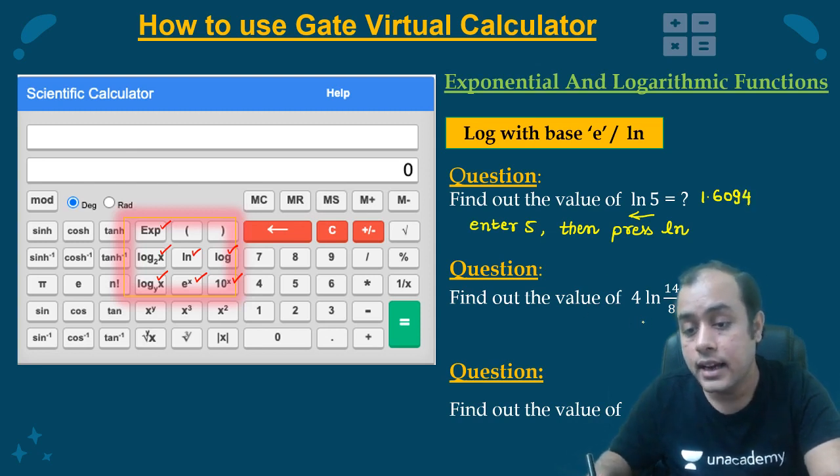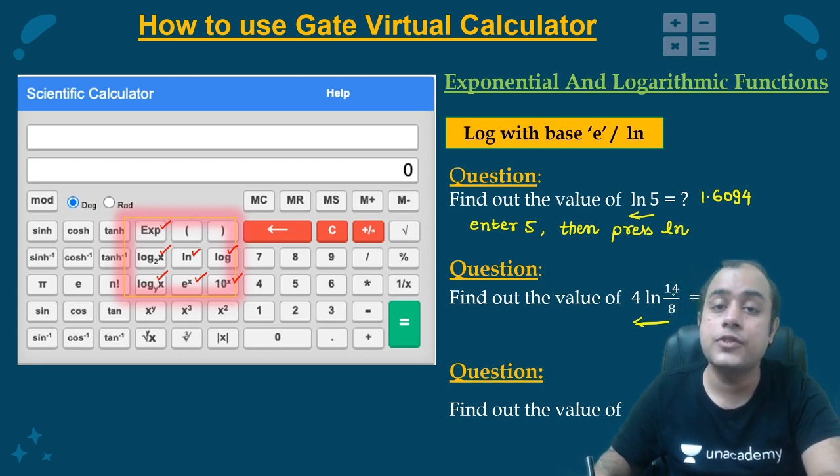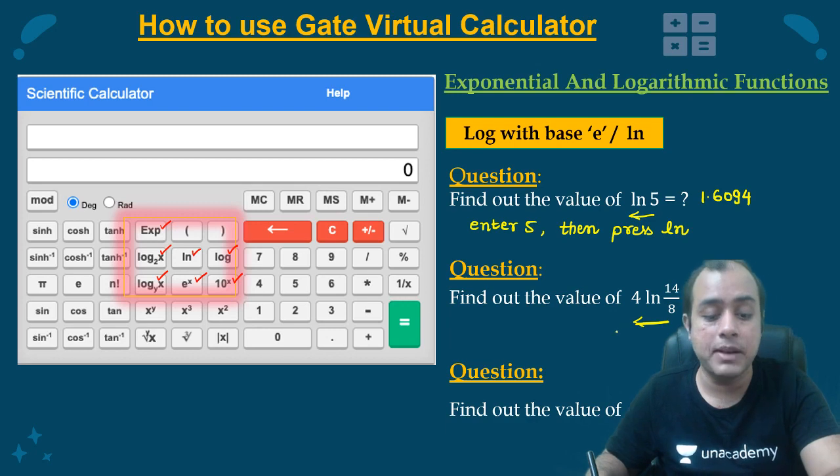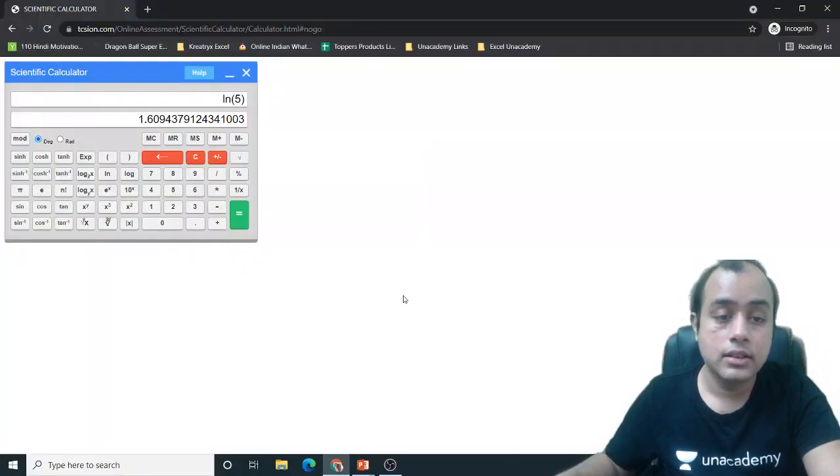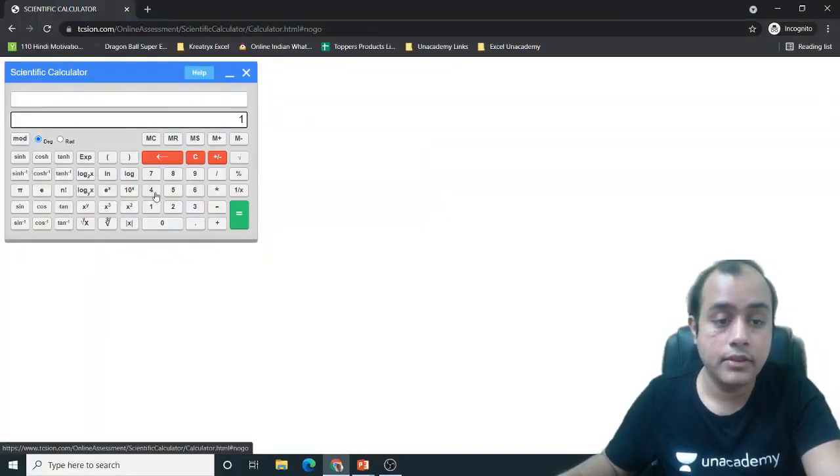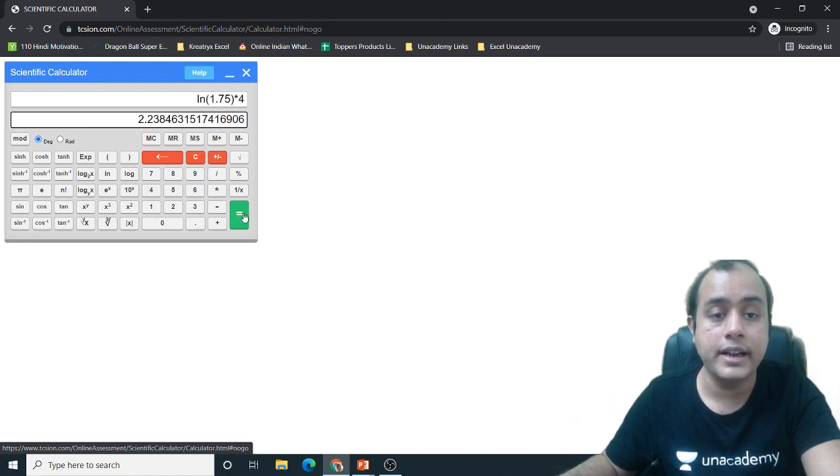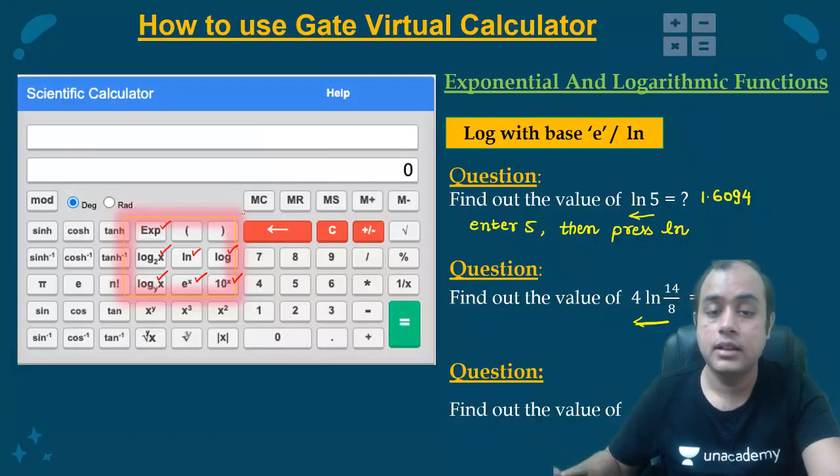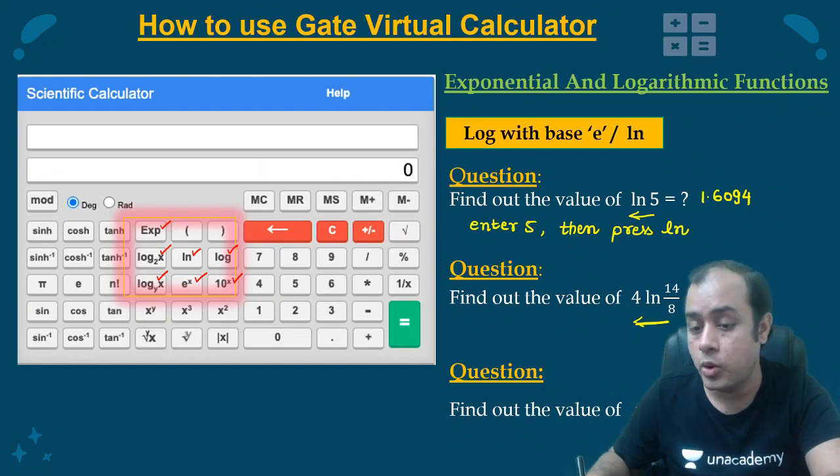What about this? Again my dear you will go from right to left. That is first you evaluate 14 by 8, then log, then multiply it by 4. So I will clear it. 14 by 8, then I will press log, then I will multiply it by 4. 2.2384. So it is coming out to be 2.2384.